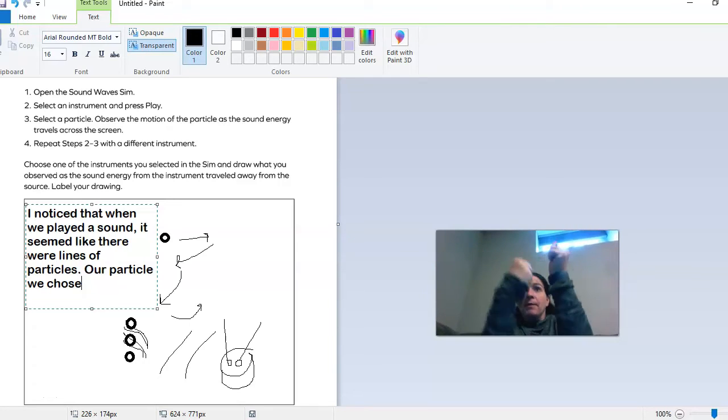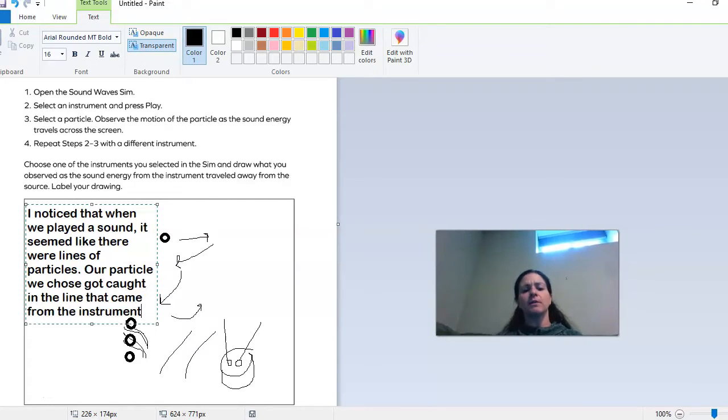We chose seemed like it moved in the line for a little bit. It got caught in the line and maybe bumped in, it collided with some other pieces, and then it went back. So our particle example that we chose got caught in the line that came from the instrument and then eventually went back to where it started and kept moving.